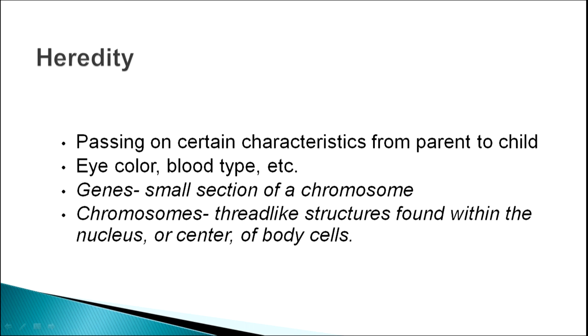Heredity is the passing of certain characters from parents to a child — these characters may be eye color, blood type, etc. Heredity is passed in terms of genes. Genes are a small section of our chromosomes. Chromosomes are thread-like structures which are found within our nucleus, which is the center of our body cells.